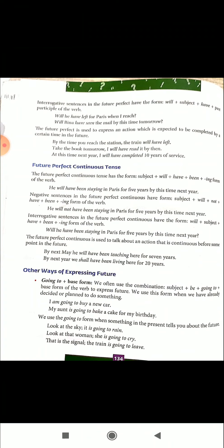Looking at the first sentence: 'When you reach the station, the train will have left' — this is a future perfect action. 'I will have read it by then' — a future perfect action. 'I will have completed ten years of service' — a future action that is completely done in the future. Since it is a completed action in the future, we use Future Perfect Tense.